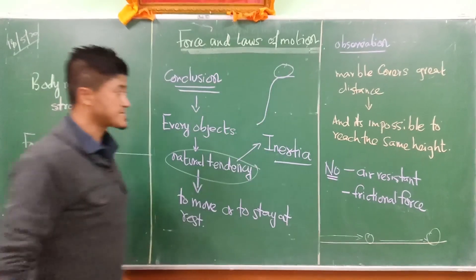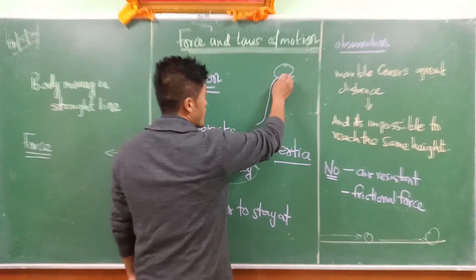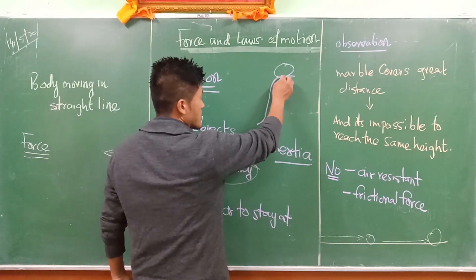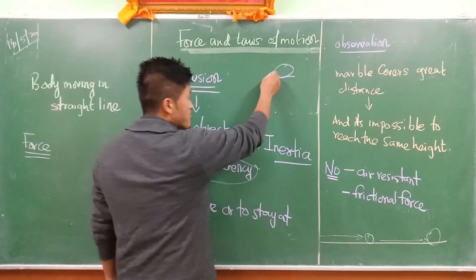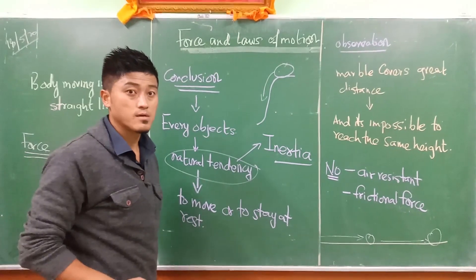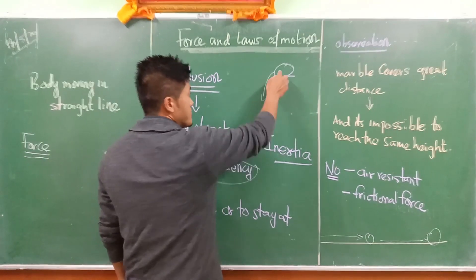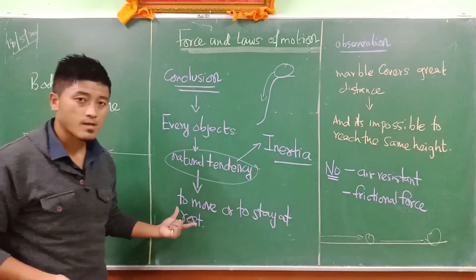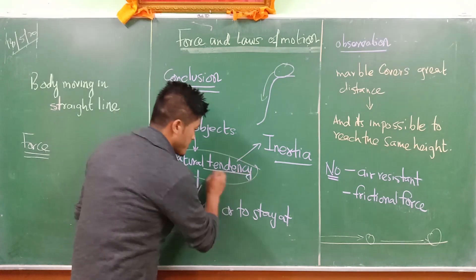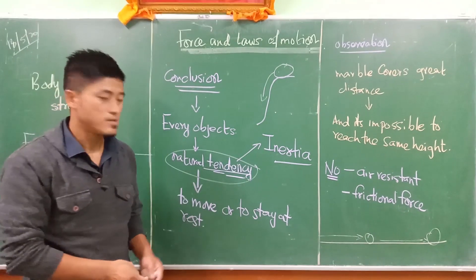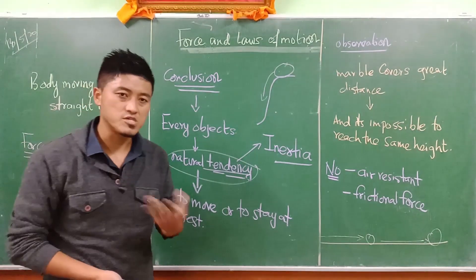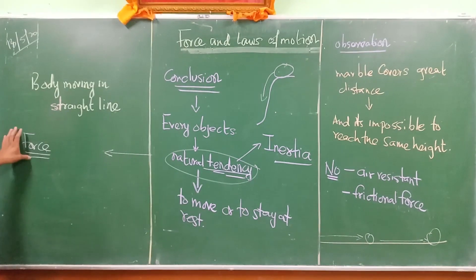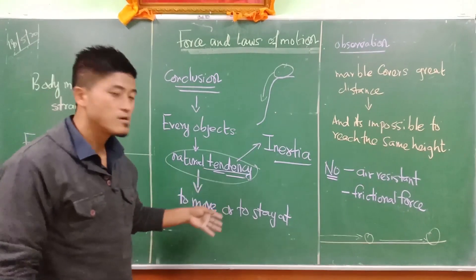For example, a rock sitting on top somewhere has a certain ability to stay at rest. We can see that this stationary object has its own tendency to stay at rest - and that tendency or ability is what we call inertia. Tomorrow onwards we will move forward with more about inertia. Today we discussed force and the Galileo experiment.